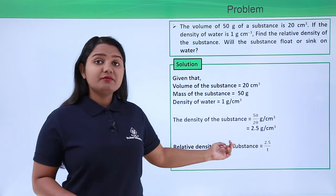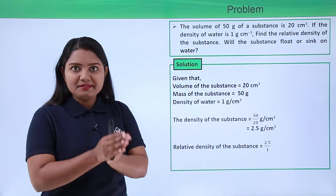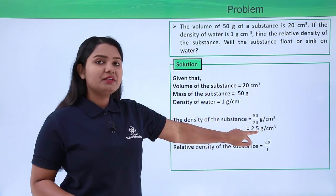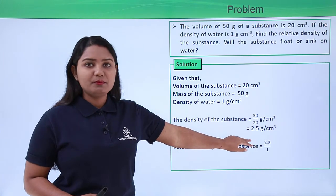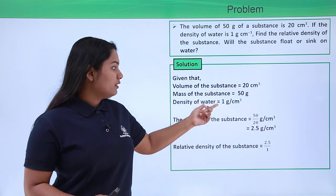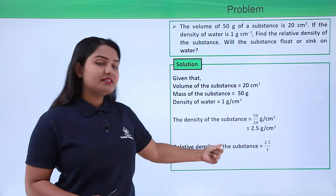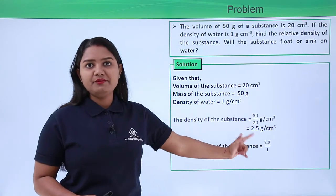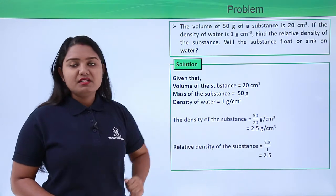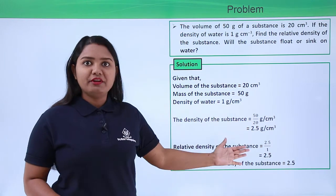The relative density of the substance, as we know from the formula, is the density of the substance divided by the density of water. We have found the density of the substance to be 2.5 grams per centimeter cube and the density of water to be 1 gram per centimeter cube. Putting these into the formula, we get the relative density to be 2.5 divided by 1, which turns out to be 2.5.